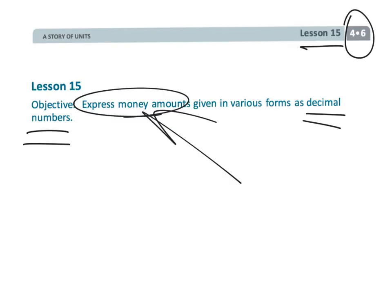And that wraps up fourth grade module 6 lesson 15 — using money to talk about decimals.